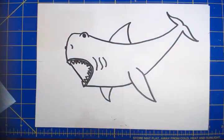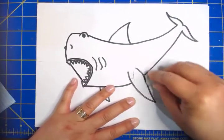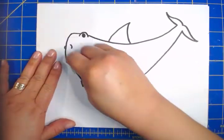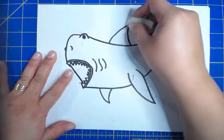So now that you've done all the tracing with your sharpie or black marker, then you can go back and erase all those extra pencil marks.